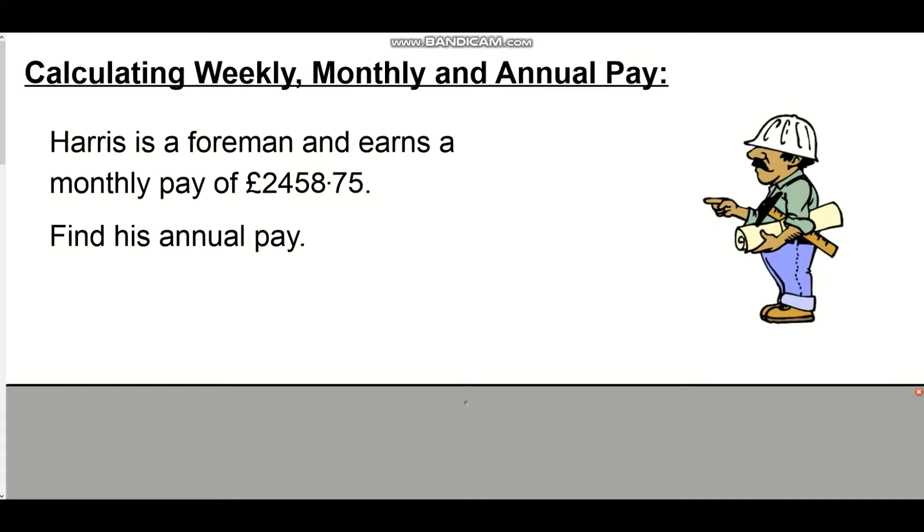Harris is a foreman and he earns a monthly pay of £2,458.75. Find his annual pay. Let's highlight some of these words here: monthly pay and annual pay. We have how much he makes in a month, £2,458.75. We want to find how much he makes a year. That's what annual pay means. So all we need to think about is how many months are in a year, and the answer is 12 months in a year.